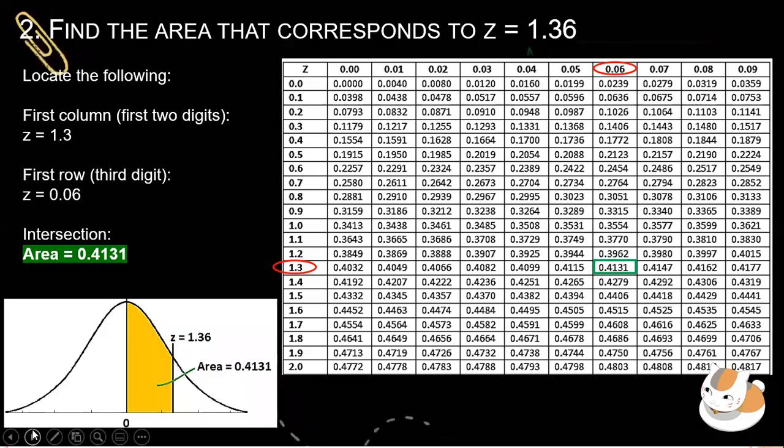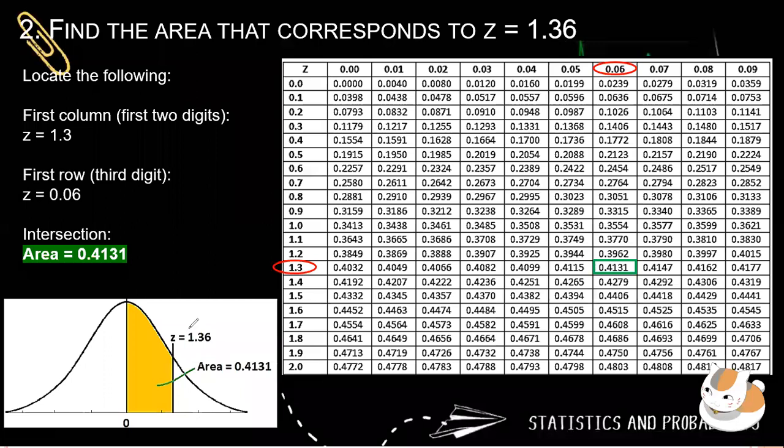How do we illustrate it? Notice that 1.36 is somehow located here. So if this is 1, this is 2, and this is 3. Notice that this area, the shaded yellow area here, represents this probability as well. So in here, our probability is 41.31%.